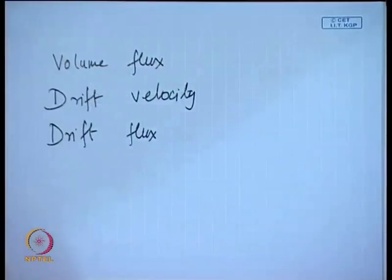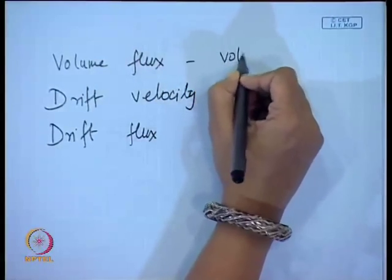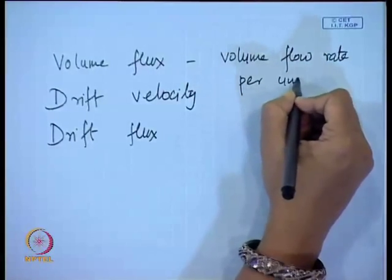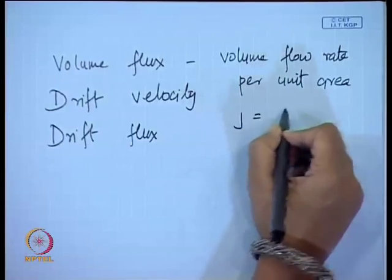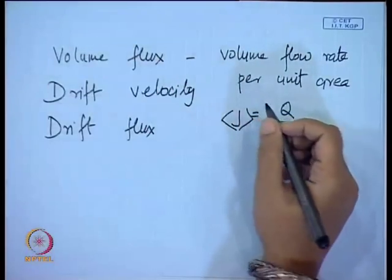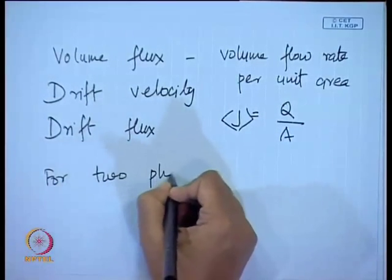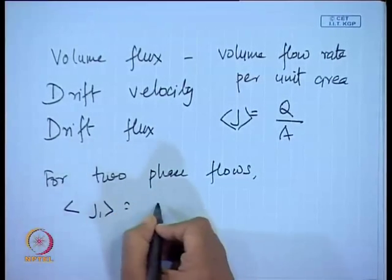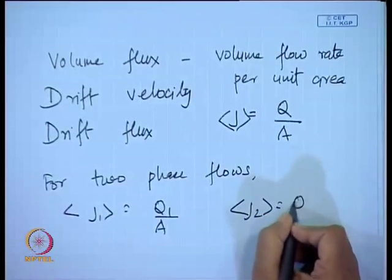As far as volume flux is concerned, as we have already defined, it is simply the volume flow rate per unit area. This is j = q/A — it is the average volumetric flux. For two-phase flow situations we give certain subscripts, so it is j₁ = q₁/A and j₂ = q₂/A.